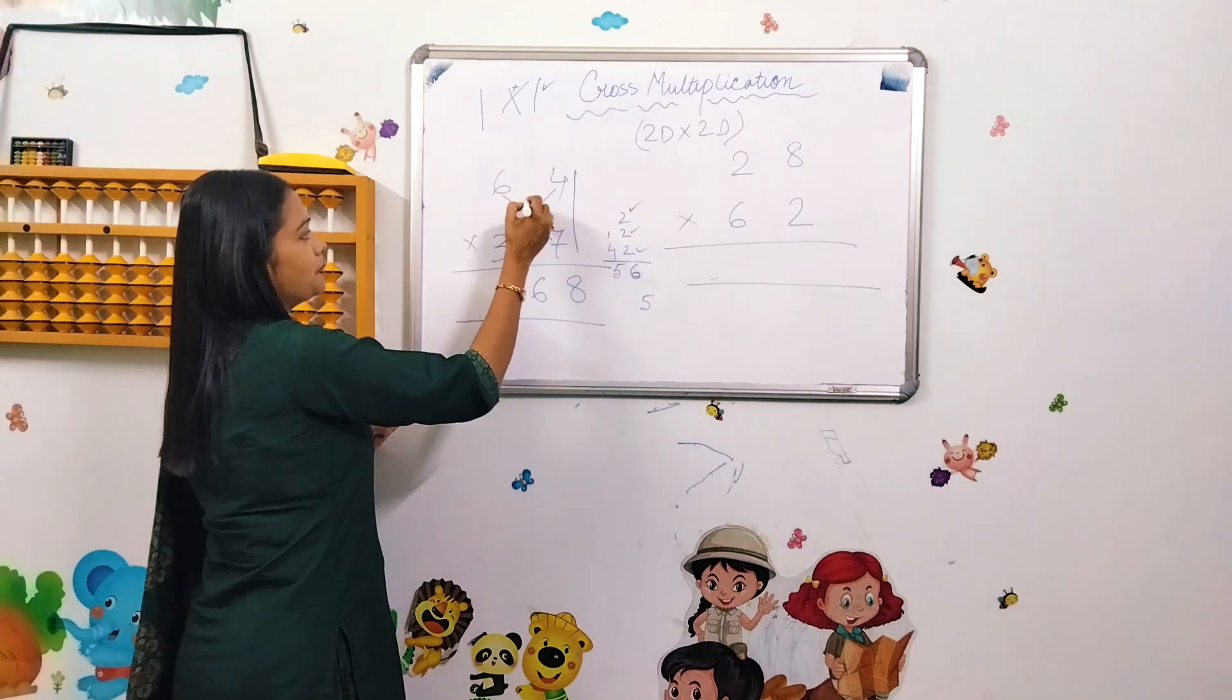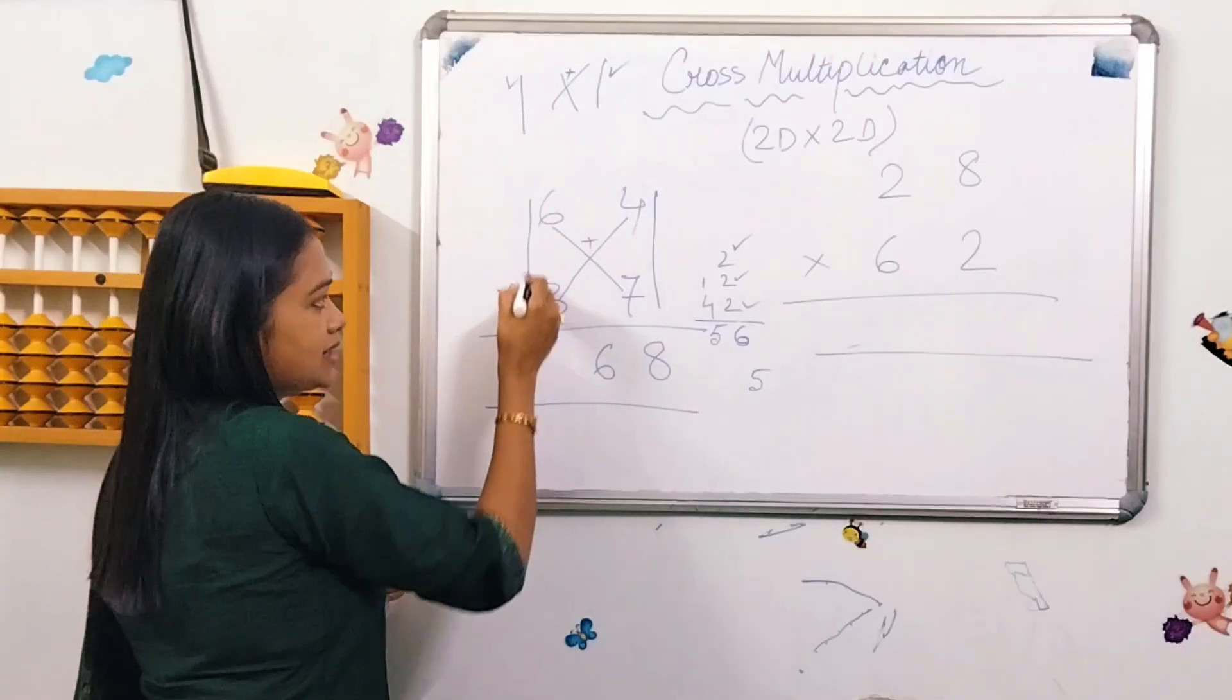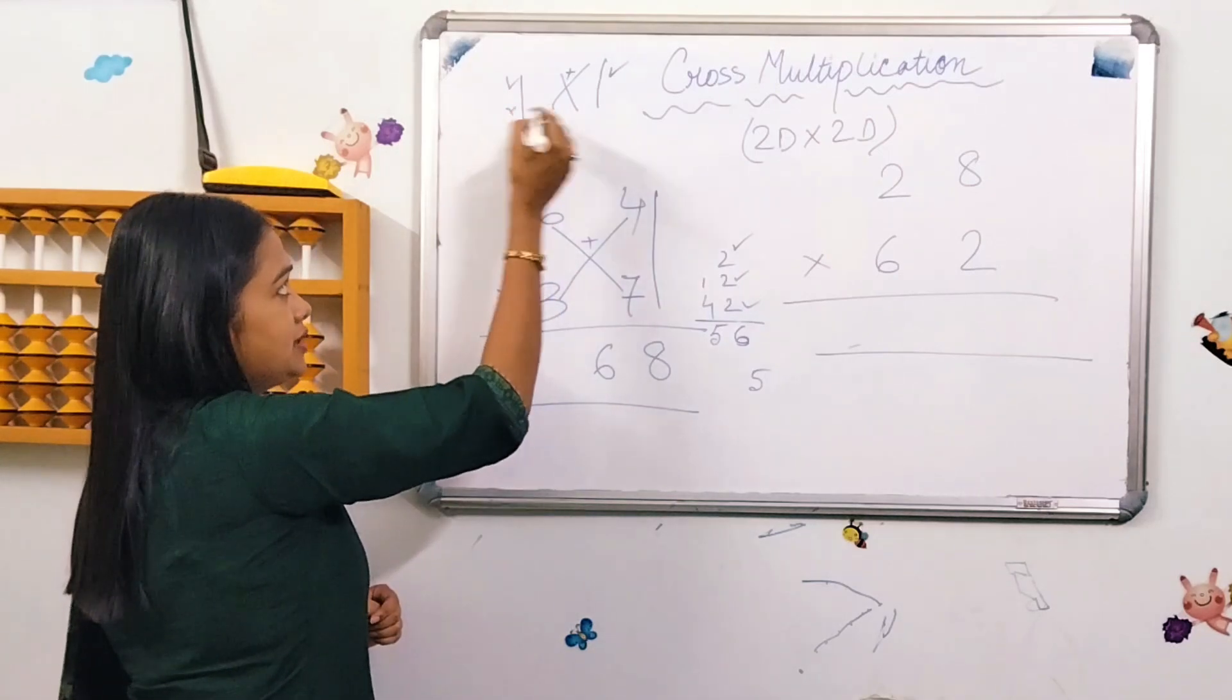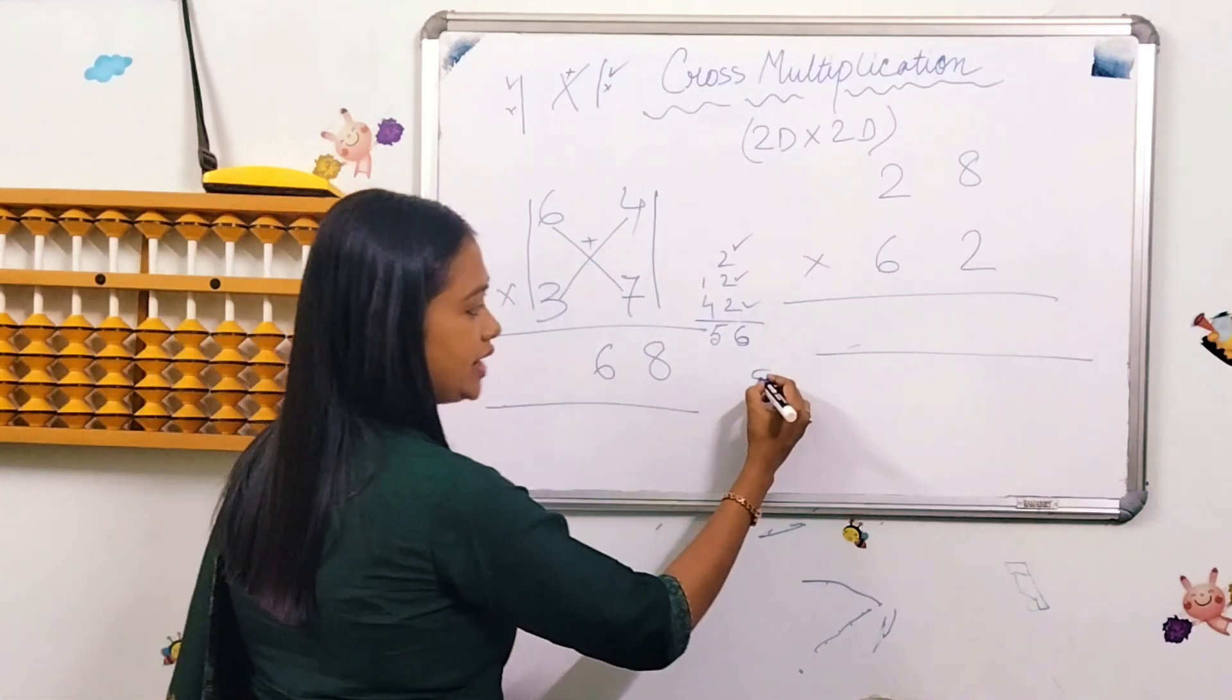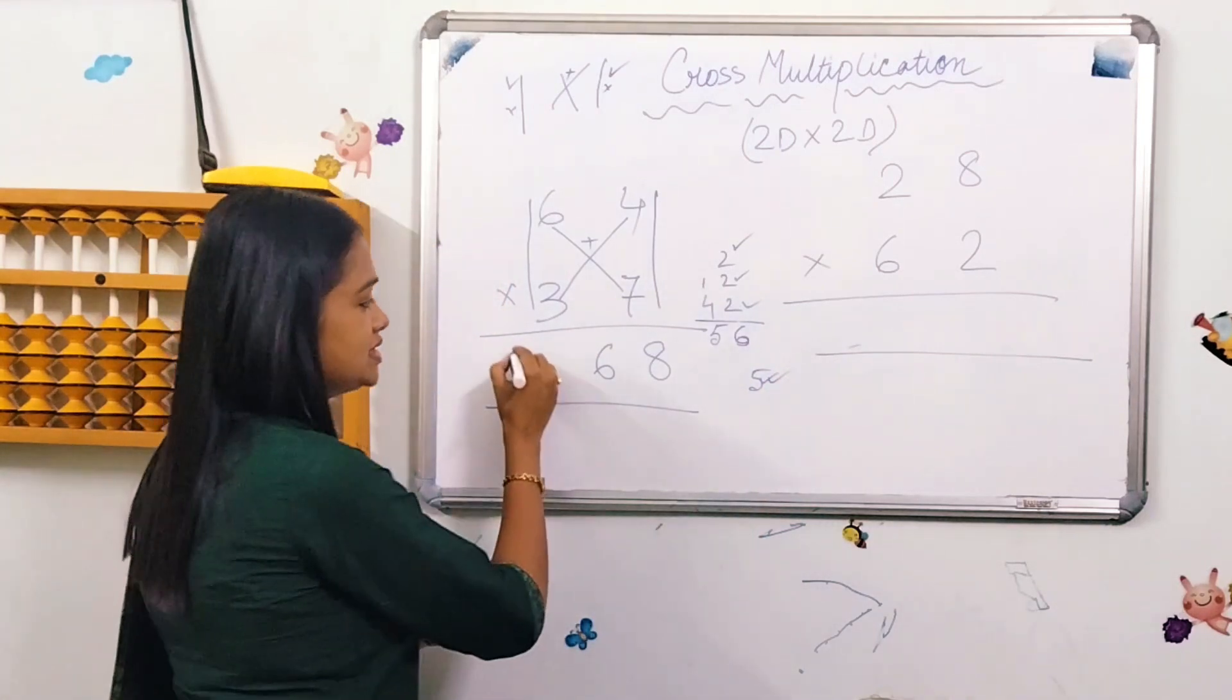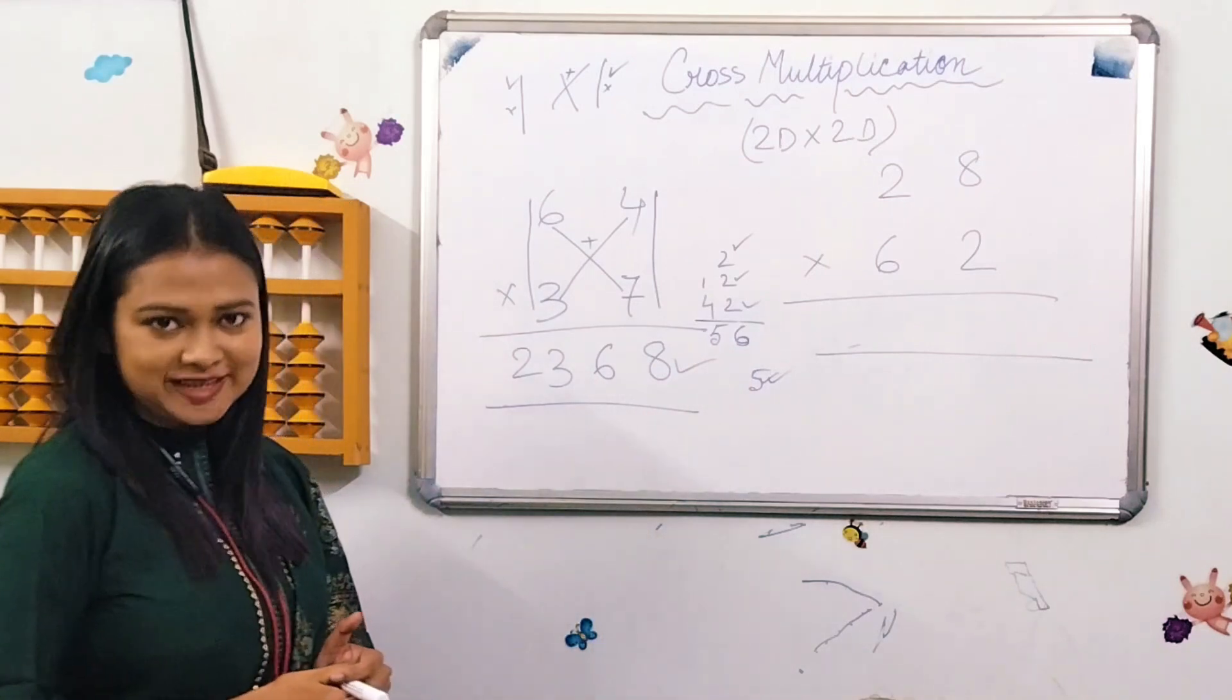This sign means you have to multiply the first number with the first number. 6 and 3 is 18. And what did we carry? 5. 18 plus 5 is 23. And here is your answer: 2278.